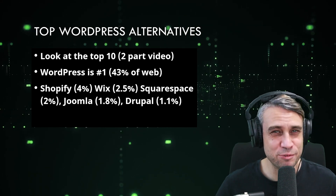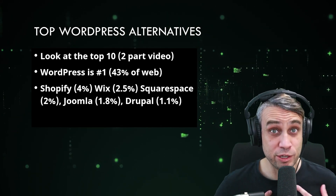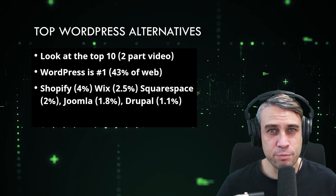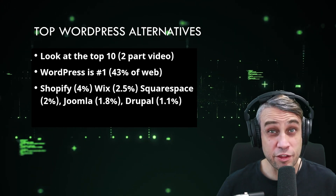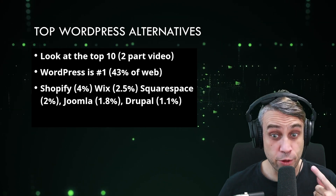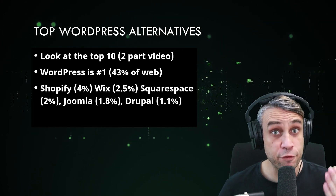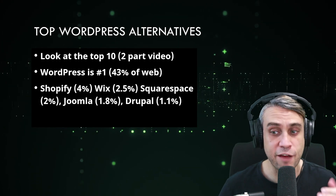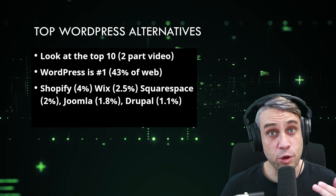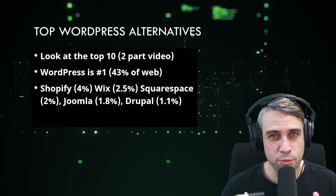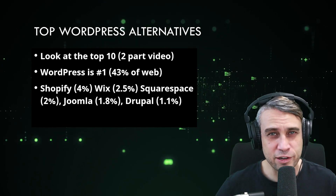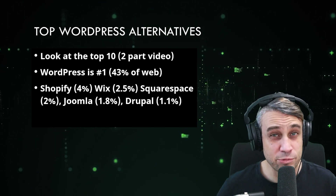I will be a bit biased towards WordPress because that's my favorite and the one we use the most on this channel. The five most used platforms other than WordPress: WordPress has 43% of the web, then there's Shopify with 4%, Wix with 2.5%, Squarespace with 2%, Joomla with 1.8%, and Drupal with just over 1%. I'm going to look at those five today.